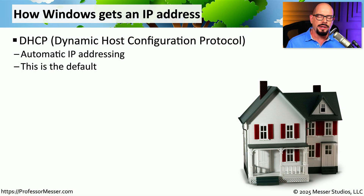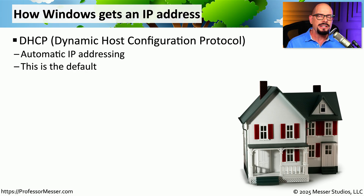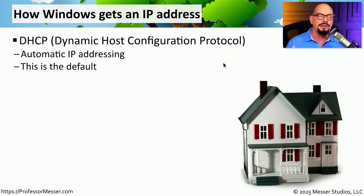We've become very used to turning on our computer wherever we happen to be and it automatically gets an IP address. This might be on our local network at home, in a coffee shop, a hotel, or anywhere else we might happen to go. Our computers are able to receive this automatic IP addressing through DHCP, or Dynamic Host Configuration Protocol. This is the default setting for most operating systems and it makes it very easy to obtain an IP address and immediately connect and use the network.